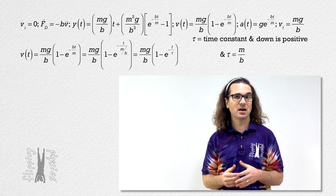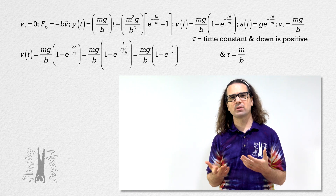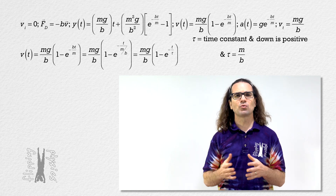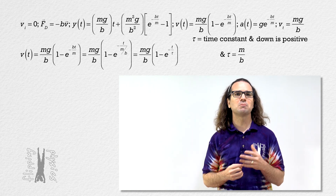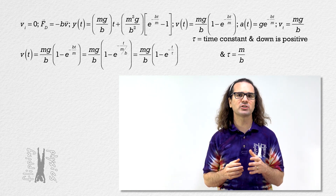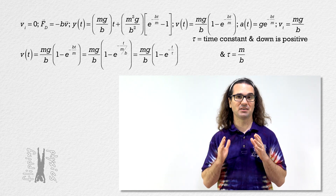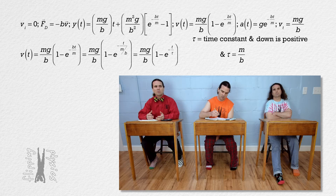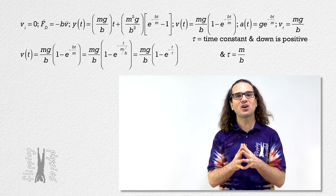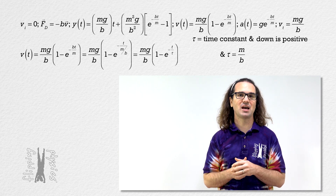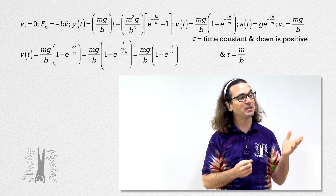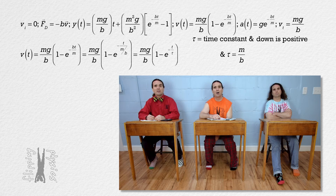There are other time constants for other relationships, so realize the time constant equals mass over proportionality constant for this specific example. Let's start by determining the units for the time constant. The time constant equals mass over proportionality constant. The units then are kilograms over…